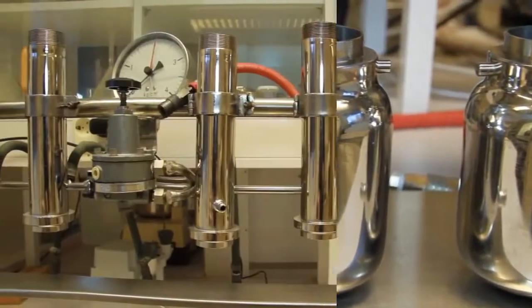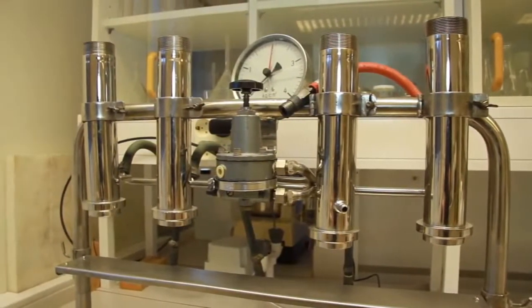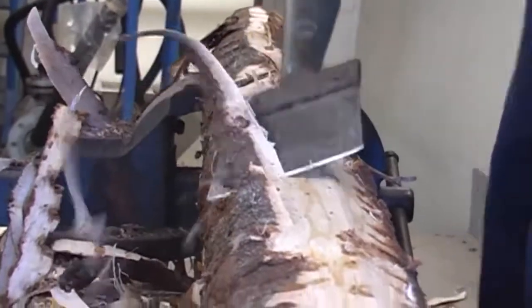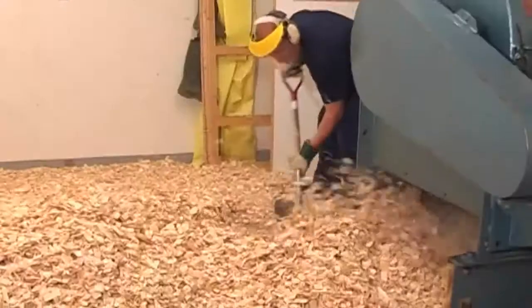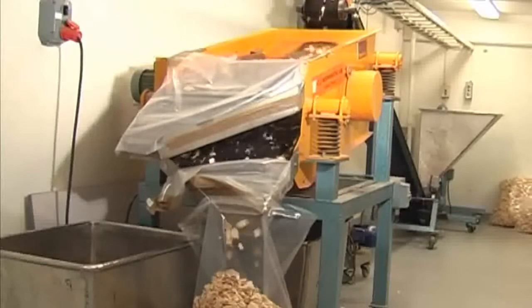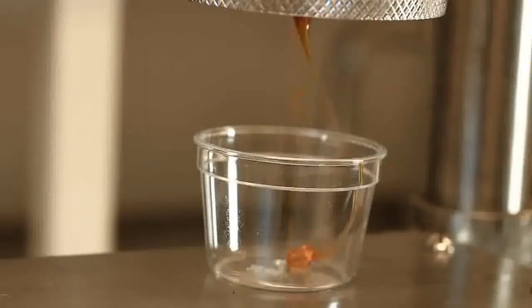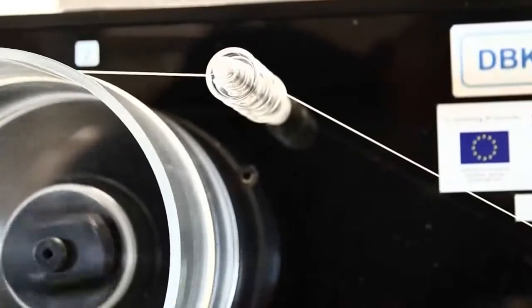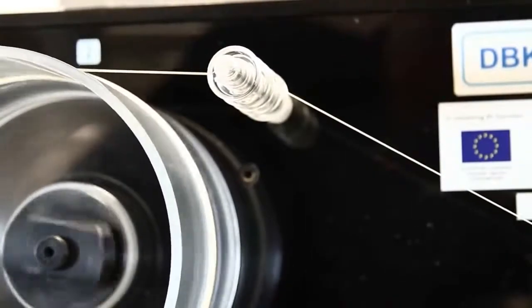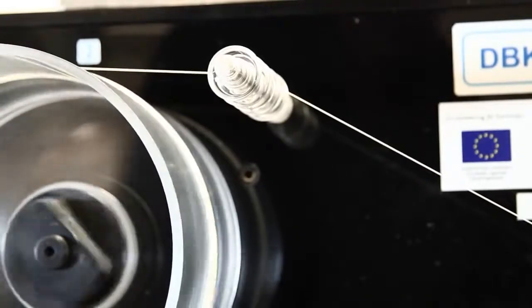This is possible by using more research pilot equipment, which covers the whole value chain. The entire process from a log through barking, chipping, sorting, cooking, bleaching, production of viscose dope, and finally spinning of viscose fibers can be simulated. But it is also possible to focus on selected parts of the value chain.